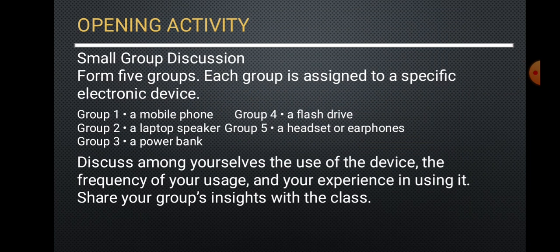Opening activity: small group discussion from 5 groups. Each group is assigned to a specific electronic device. 1st group: mobile phone. 2nd group: laptop speaker. 3rd group: power bank. 4th group: flash drive. 5th group: headset or earphones. Discuss among yourselves the use of the device, the frequency of your usage, and your experience using it. Share your group's insights with the class.